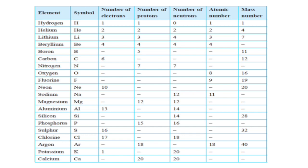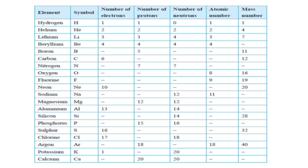I want you to try and fill in the rest of the table. For example, for calcium: the number of protons is 20, so the number of electrons equals 20. The atomic number is also 20. To get the mass number, take the number of protons (20) plus the number of neutrons (20), giving a mass number of 40. I want you to fill in the rest and submit in our comment section. For more videos, subscribe to our channel. Thank you.